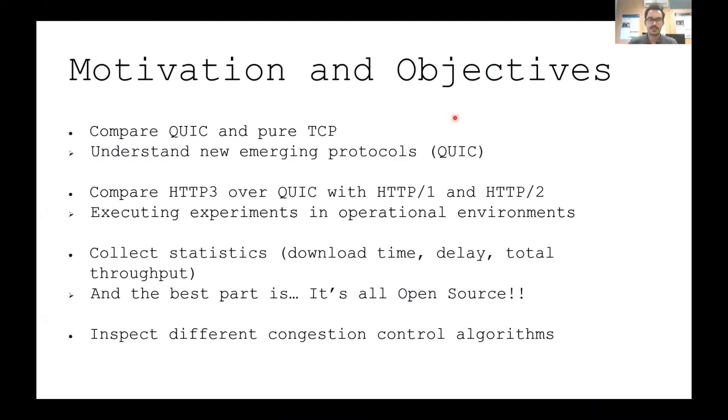First about the motivations and objectives of this paper. The first objective was to compare pure QUIC with pure TCP. Since QUIC has been around for not that long, this will help understand this new emerging protocol from the transport layer. Then we move into comparing it in the application layer, comparing HTTP3 over QUIC with HTTP1 and HTTP2. We executed these experiments in real operational environments with the help of MONROE. We collect statistics such as download time, delay, total throughput, round trip time, and bytes in flight. And the best part is it's all open source. The dataset is freely available on Zenodo and the code is freely available on GitHub.